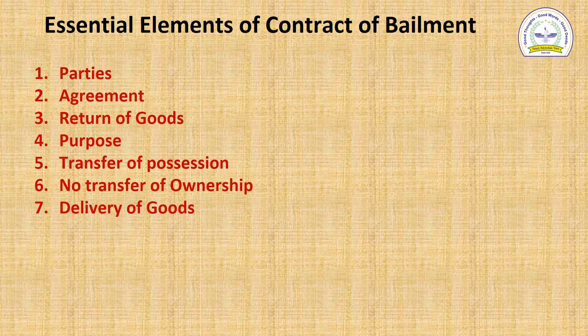The essential elements are: first, parties; second, agreement; third, return of goods; fourth, purpose; fifth, transfer of possession; sixth, no transfer of ownership; and the last one is delivery of goods.